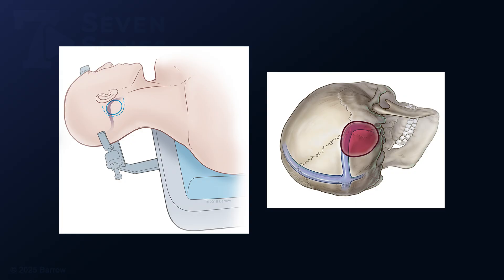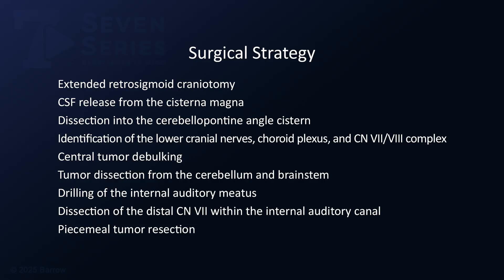Patient position, skin incision, and craniotomy are all shown in these illustrations. Strategy consisted of the extended retrosigmoid craniotomy, CSF release from the cisterna magna, dissection into the cerebellopontine angle cistern, identification of the lower cranial nerves, choroid plexus, and the seventh and eighth nerve complex, central tumor debulking, tumor dissection from the cerebellum and brain stem, drilling of the internal auditory meatus, dissection of the distal facial nerve within the internal auditory canal, and the final piecemeal tumor resection.